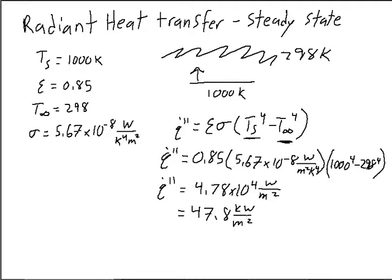For perspective, paper usually ignites around 20 kilowatts per meter squared. So this is a pretty significant amount of radiant energy coming off this surface that's at 1000 Kelvin. It would easily ignite something like paper or cellulose.